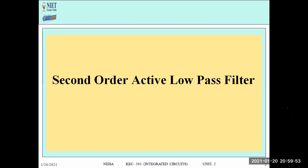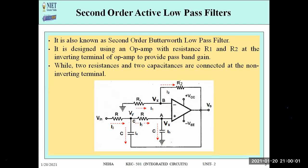We are still using an active component but now the order has been increased. In the circuit diagram you can see we have increased the R and C combination. The OPAMP is there with a negative inverting terminal. In the first order, resistor R1 and current I1 were used at the input with R2 in the feedback. Now the change is we have used two combinations of R and C instead of one, which makes this a second order active low pass filter.